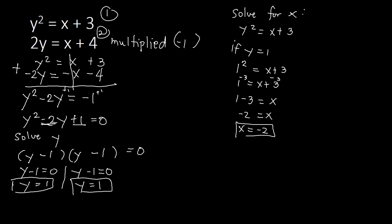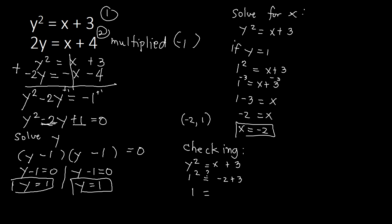You may check your answer. Our solution as a coordinate is x equals negative 2 and y equals 1, giving the point (negative 2, 1). Let's verify using the first equation: y squared equal to x plus 3. Substituting y equals 1 and x equals negative 2, we get 1 squared equal to negative 2 plus 3. 1 equals 1. That is correct.